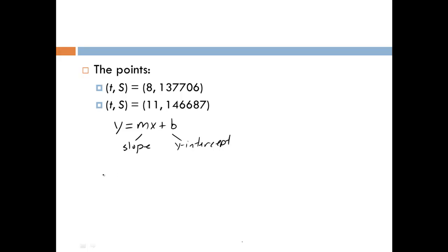Now, we know how to find slope, which is y2 minus y1 divided by x2 minus x1. In this case, we're going to have 146,687 minus 137,706 divided by 11 minus 8.